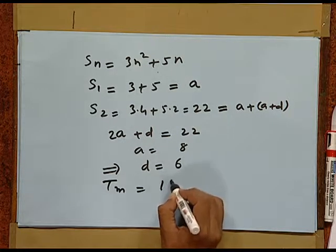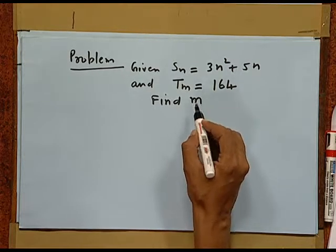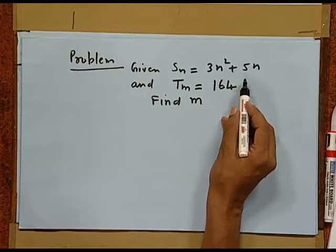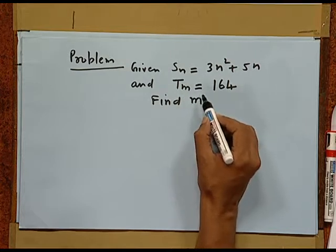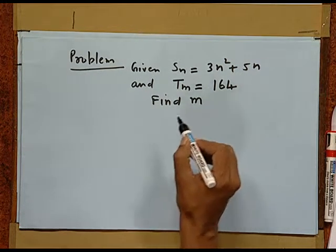Now, suppose in this series, we have to find the term which gives 156. I mean that number of term which makes 156. That is, we are given that tm is 156 and we have to find m. Let us take a problem. Here, sn is given to be 3n square plus 5n, and the mth term is given to be 164. We have to find m.